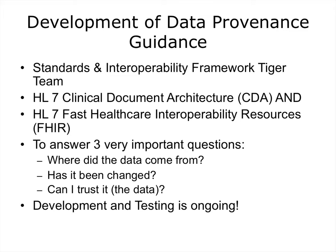There is ongoing development of data provenance guidance. A Standards and Interoperability Framework Tiger Team is working with HL7, looking at the Clinical Document Architecture and FHIR (Fast Healthcare Interoperability Resources), really trying to answer three very important questions: Where did the data come from? Has it been changed? And can I trust it — can I trust the data that I see in front of me? At the time of this recording, development and testing under the S&I Framework was still ongoing.